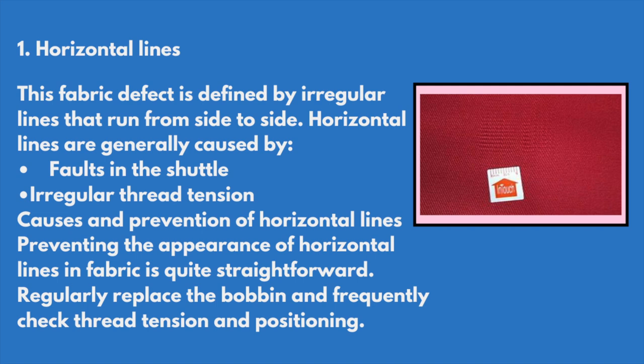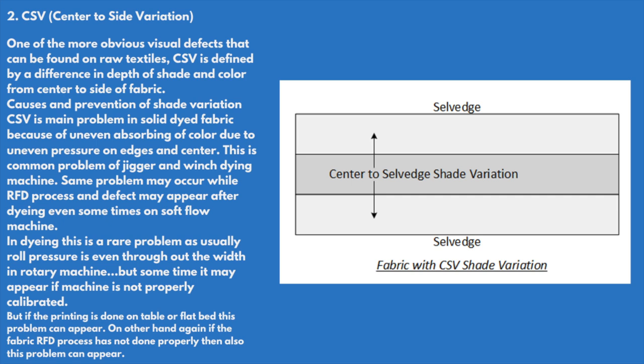Horizontal lines: this fabric defect is defined by irregular lines that run from side to side. Horizontal lines are generally caused by faults in the shuttle or irregular thread tension. Causes and prevention: preventing the appearance of horizontal lines in fabric is quite straightforward — regularly replace the bobbin and frequently check thread tensions and positioning.